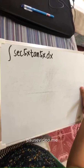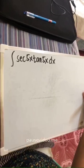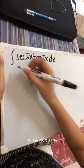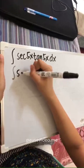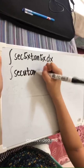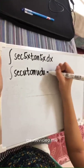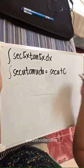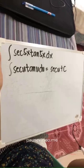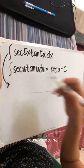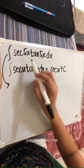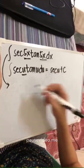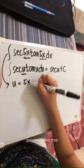Another example: the integral of sec(5x) tan(5x) dx. From the last session, we discussed that the integral of sec u tan u du is equal to sec u plus c. Solving this problem, we need to find our u. Our u here is 5x, so let u equal to 5x.